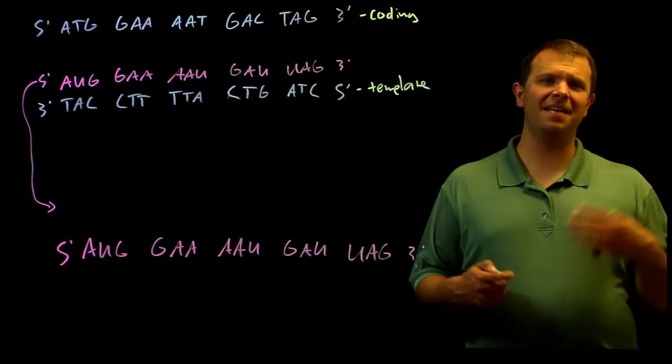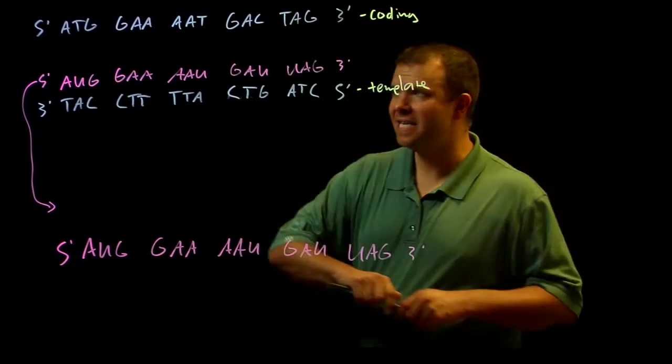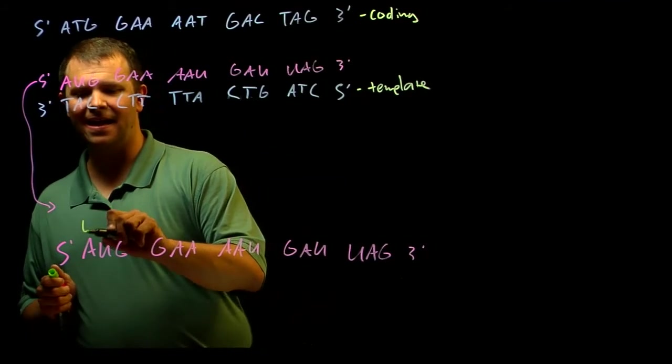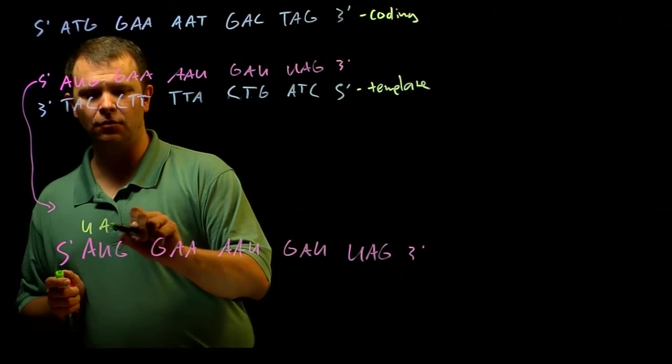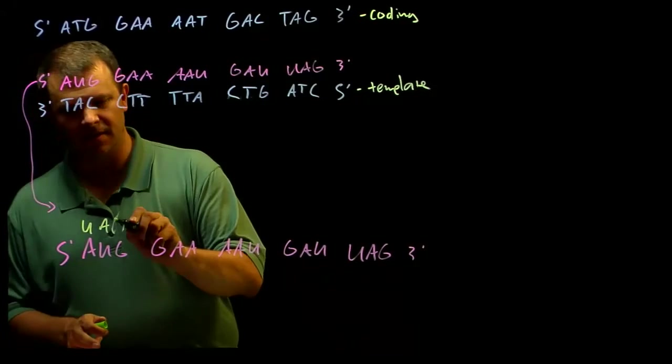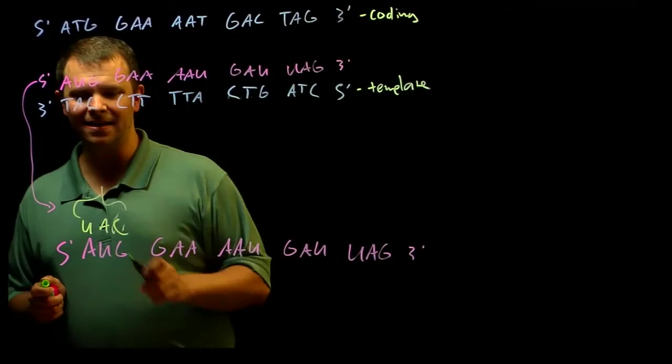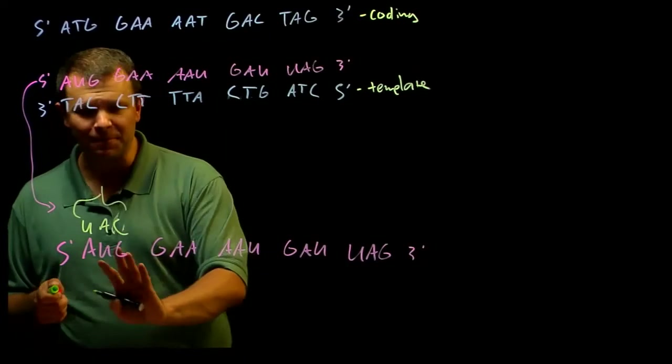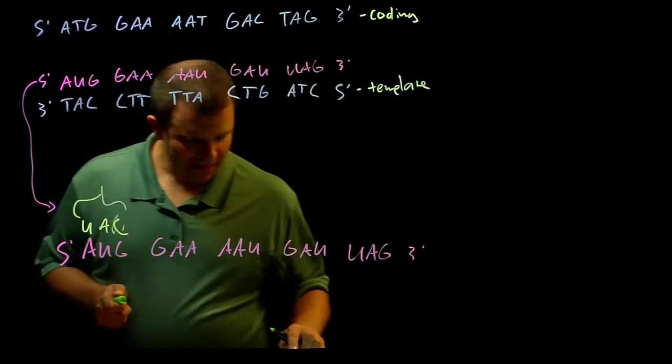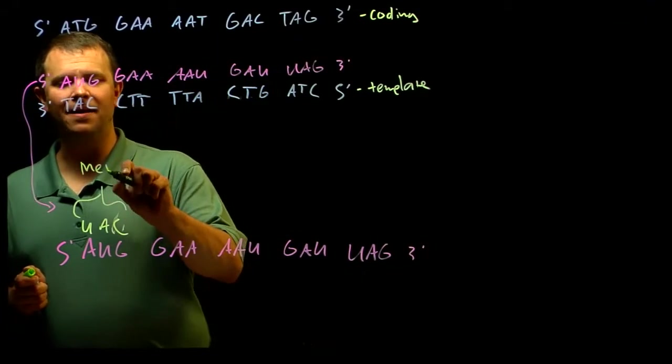And it does this with the help of an adapter molecule called a transfer RNA or a tRNA. And so that tRNA has an anticodon, which is, sorry, not a G there, a C there, has an anticodon that is, on one end, that is complementary to the codon of the RNA, and on the other end of that transfer RNA is an amino acid.